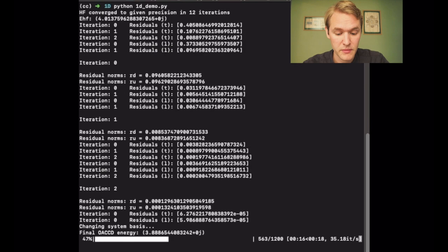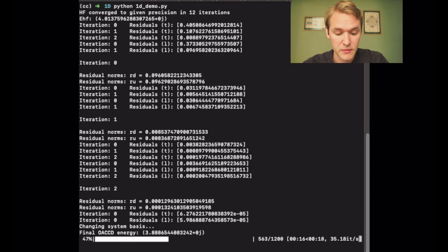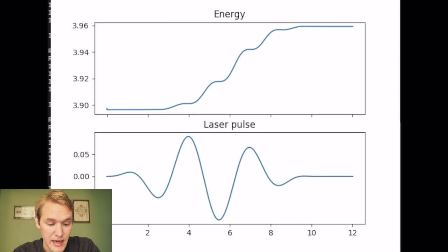This is the result. Here is our laser pulse — an oscillating field with increasing then decreasing amplitude. Because this laser field has a frequency resonant with our system, we see that the energy of the system increases throughout the time that we irradiate the system with the laser. So we excite the system.